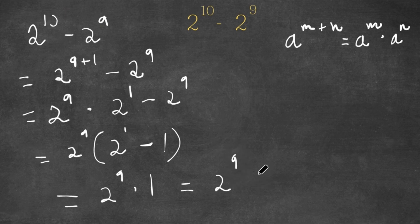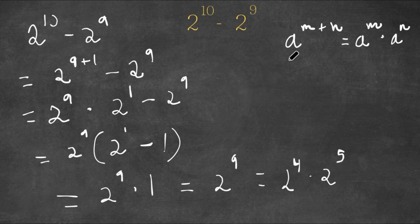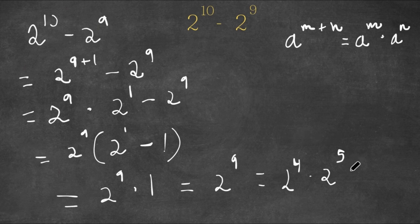Now for 2 to the power of 9, this is equal to 2 to the power of 4 times 2 to the power of 5, because a to the power of m plus n is equal to a to the power of m times a to the power of n. So 2 to the power of 4 is 16, and 2 to the power of 5 is 32. So we have 16 times 32.